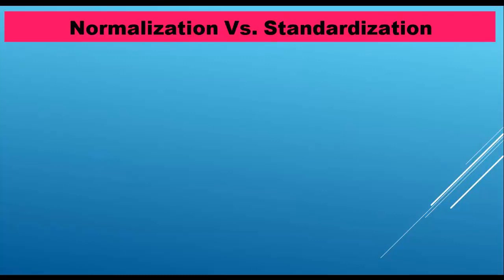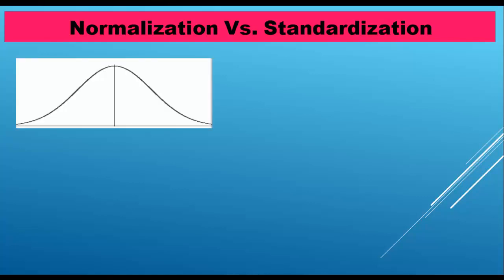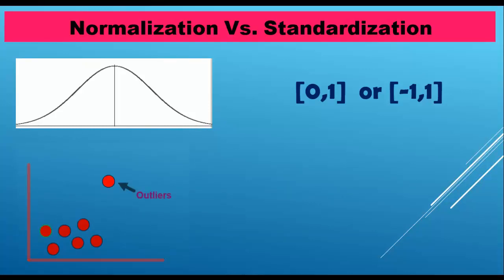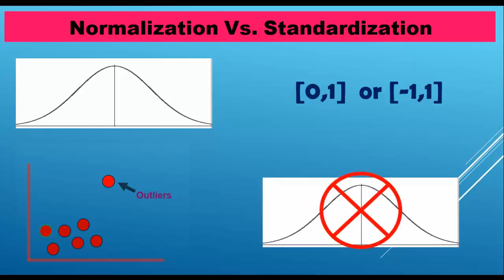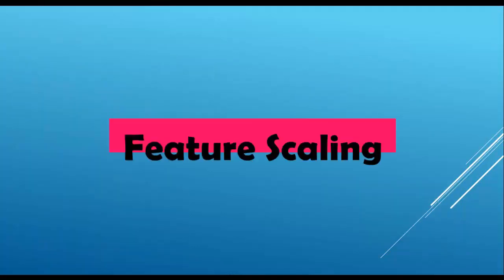When should you use normalization versus standardization? First, normalization is used when the data does not have a Gaussian distribution (bell curve), while standardization is used on data having a Gaussian distribution. Second, normalization scales values in the range of 0 to 1 or -1 to 1; standardization is not bounded by range. Third, normalization is highly affected by outliers; standardization is only slightly affected. Normalization is considered when the algorithm does not make assumptions about data distribution; standardization is used when algorithms do make such assumptions.